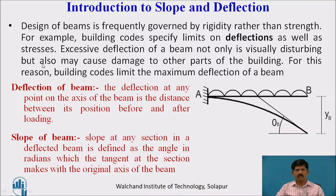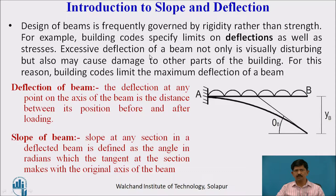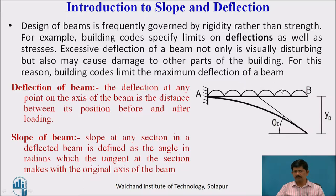Before that, we have to see what is slope and deflection to find the slope and deflection of the cantilever. Every beam is frequently governed by rigidity rather than its strength. Hence the building code specifies the limit of deflection, because excessive deflection of the beam is not only visually disturbing but may also cause damage to other parts of the building.